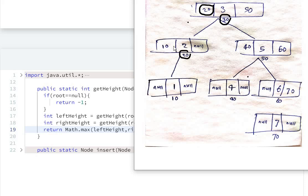20 will again check left. So on the left, what is there? There is 10. 10 will check on its left - there is null, so it will return minus one.